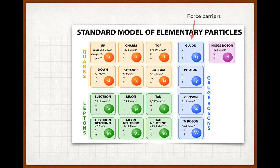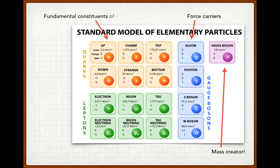Here are our force carriers. This is a simplified model of all the particles that make up the universe according to the standard model of elementary physics. It includes the force carriers, the Higgs boson — which is supposedly the reason why masses have mass, the mass creator — the six quarks, which are the fundamental constituents of matter making up mesons and baryons, and six fundamental leptons that cannot be broken down into anything smaller.